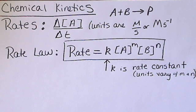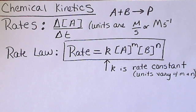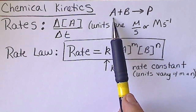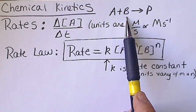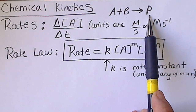When we're discussing chemical kinetics, we're interested in how quickly a reaction occurs. A generic reaction is reactant A plus reactant B combined to form some product.